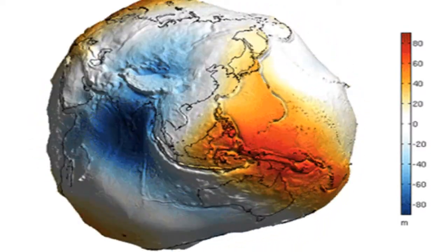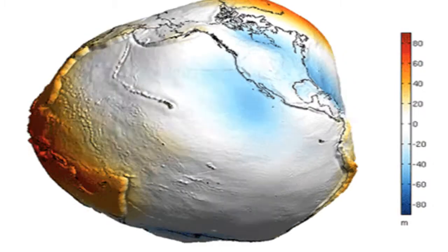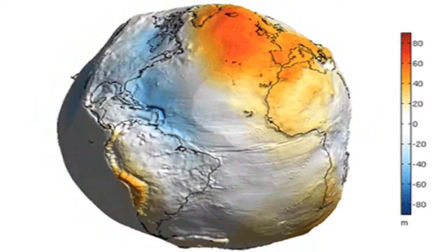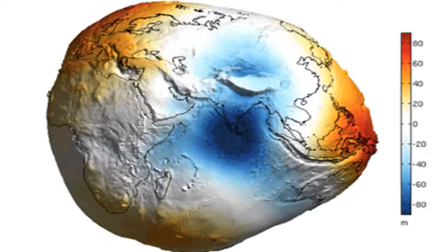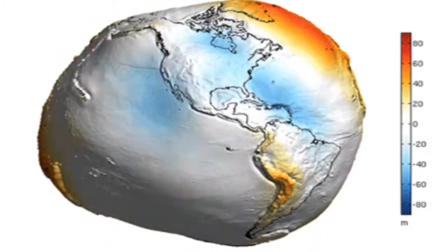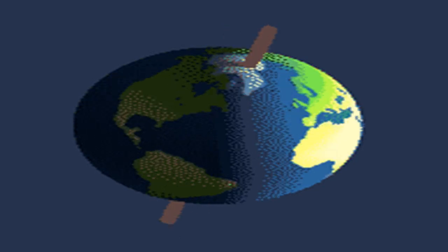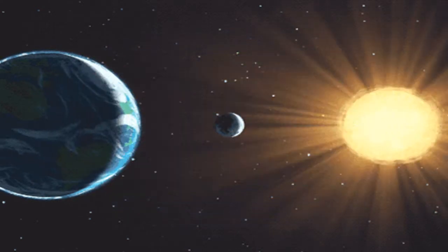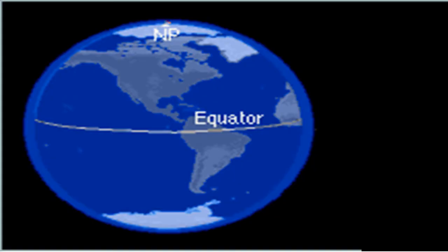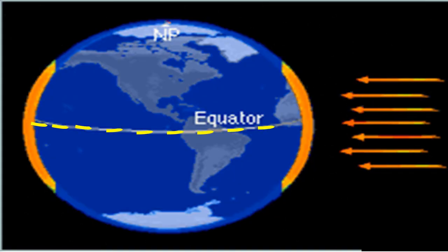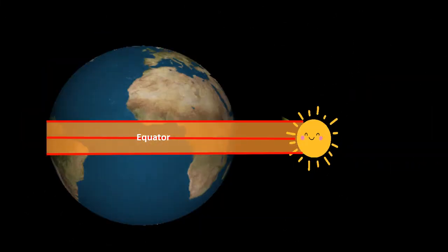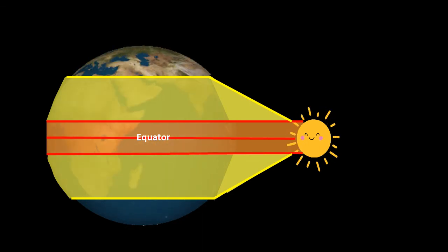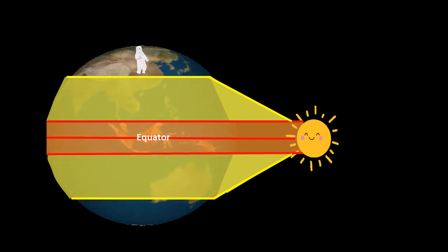Earth is a huge planet and its shape is called geoid because it is flattened at the ends and bulging at the equator, and this is the reason why all the places on the earth do not receive the same amount of heat from the sun. If the earth would have been flat and its axis straight, then all the places on the earth would have received the same amount of sunlight. Equator and the regions near it receive direct sun rays, whereas sun rays become slanting as we move away from the equator.